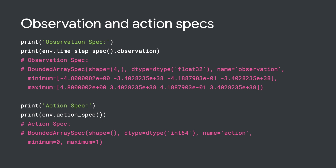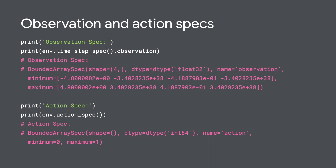Here we print out the specs of the observation and action. You can see that our observation is a tensor of four float values, which are the cart's position, velocity, the pole's angle, and velocity, respectively. The action is just an integer that can be 0 or 1, which means we move the cart left or right.